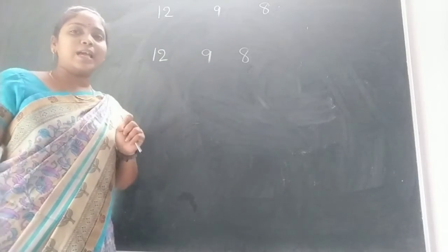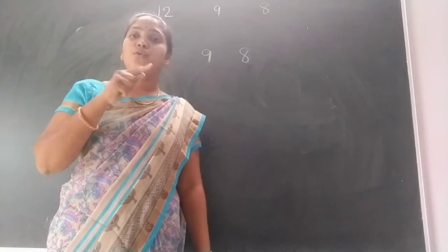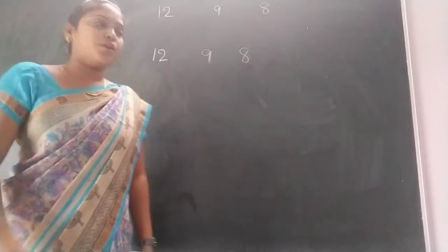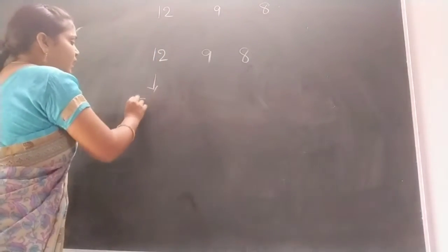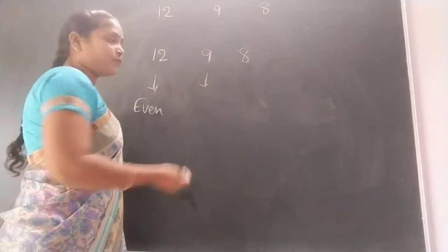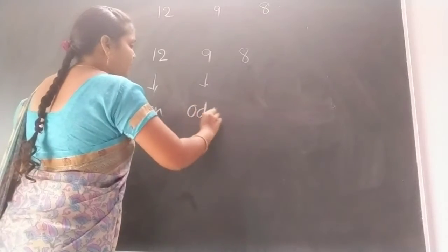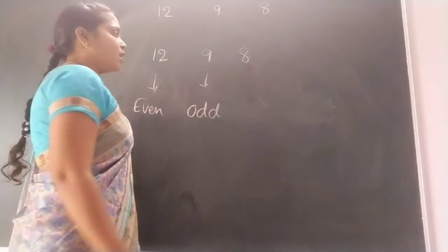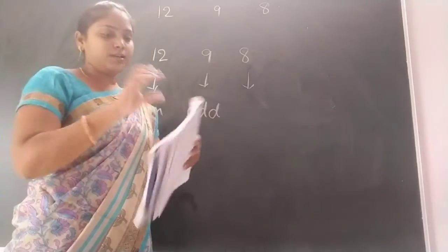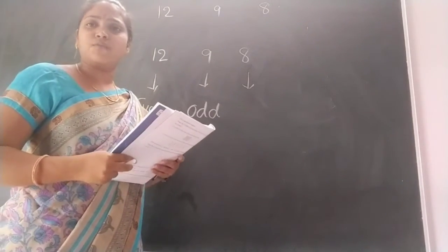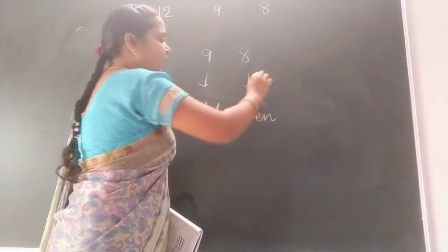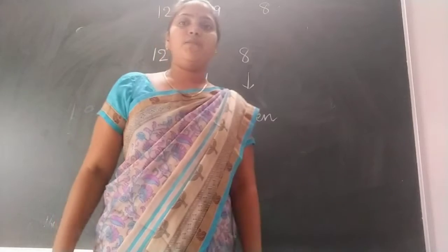Next, observe 9 children. If we make groups of 2 marbles in 9 marbles, 1 marble is left. So 12 is an even number and 9 — here 1 marble is left — so 9 is an odd number. And if we make groups of 2 in balloons, is any balloon left, children? No. So here, 8 is also an even number.